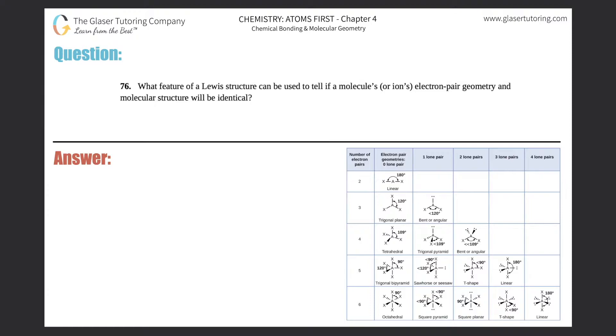Number 76: What feature of a Lewis structure can be used to tell if a molecule's or ion's electron pair geometry and molecular structure will be identical? This one is a clear-cut theoretical and kind of memorization problem.